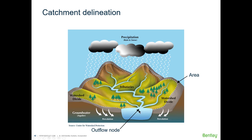When delineating catchments, keep in mind that a catchment should have uniform physical characteristics — for example, width, slope, roughness — because most runoff methods require a single value for those parameters. You may need to subdivide the catchment into smaller subcatchments that have those uniform properties.